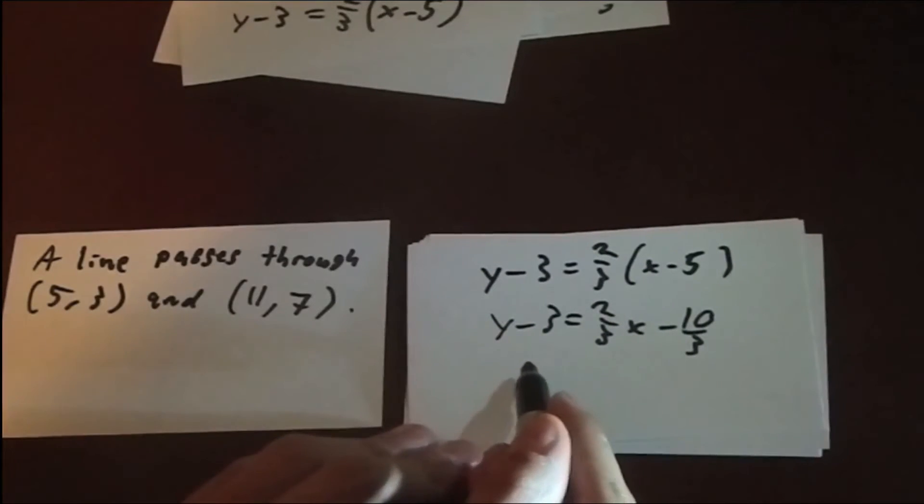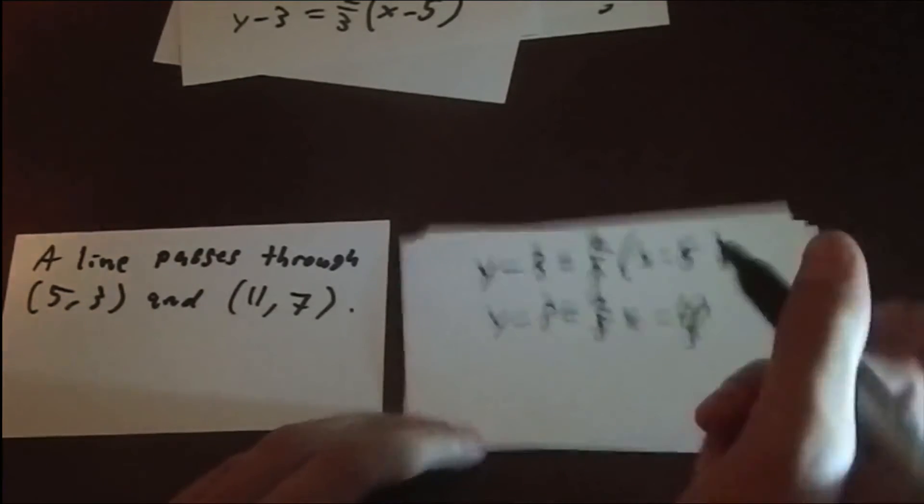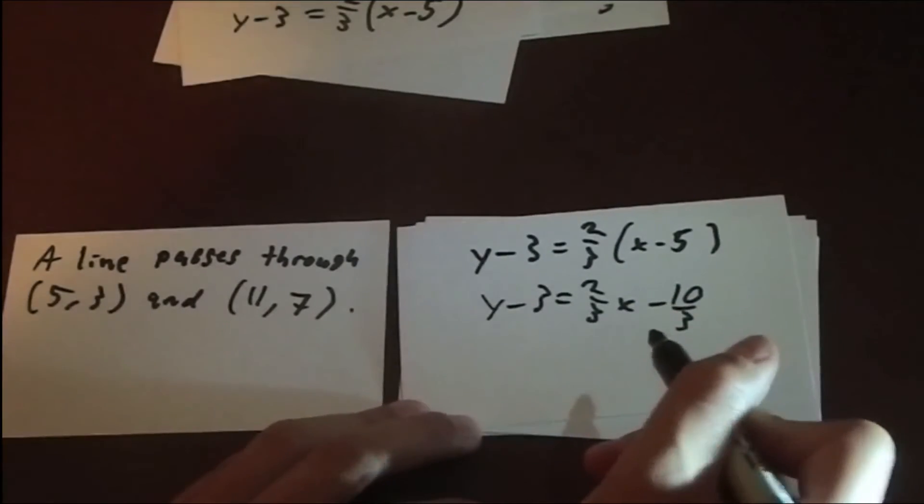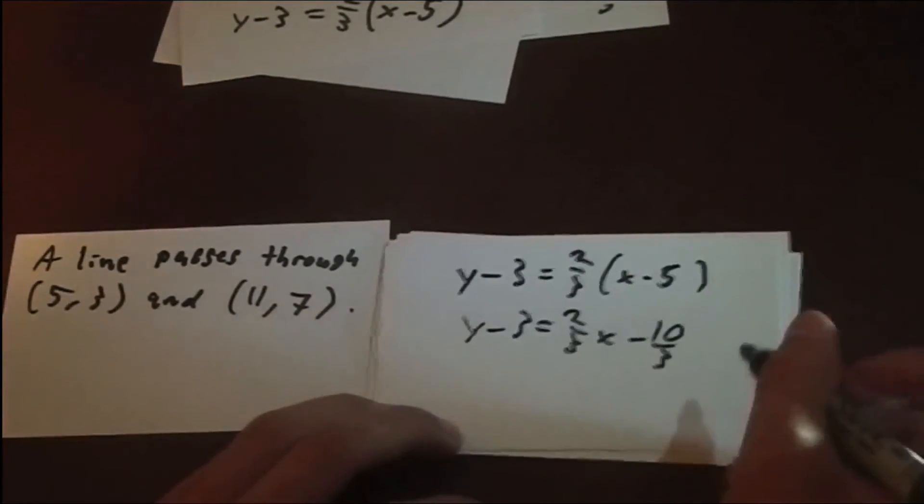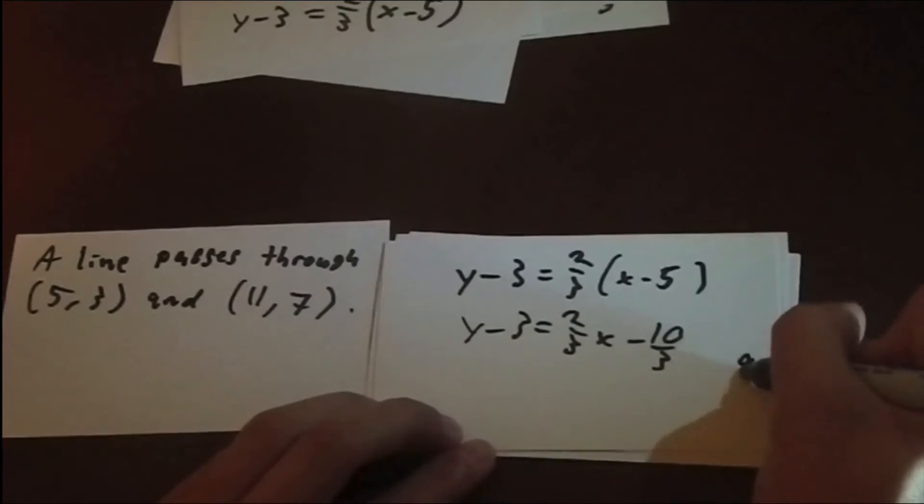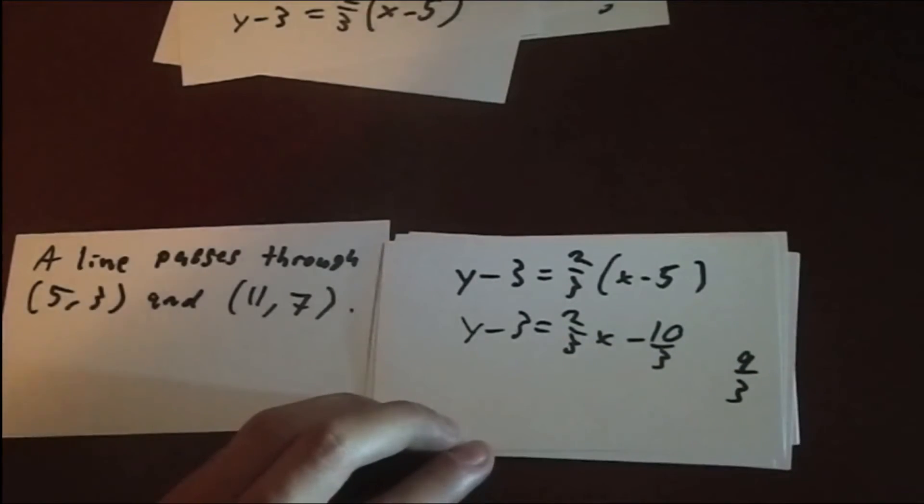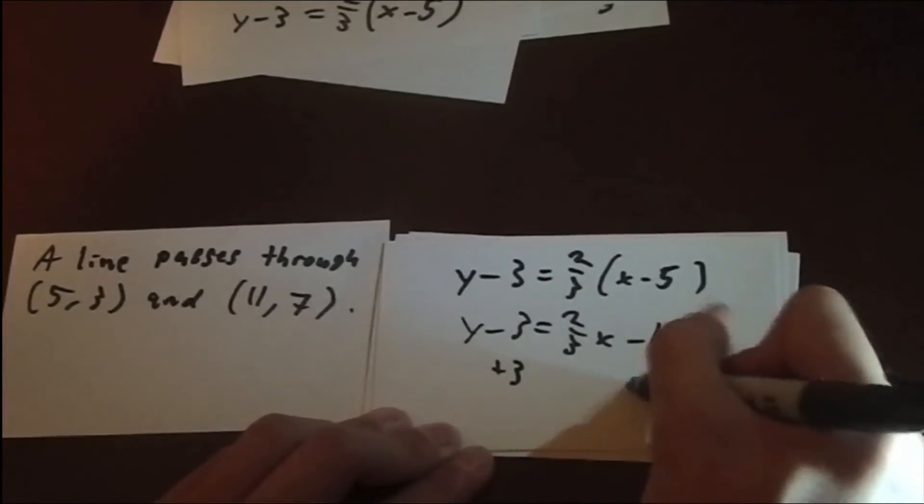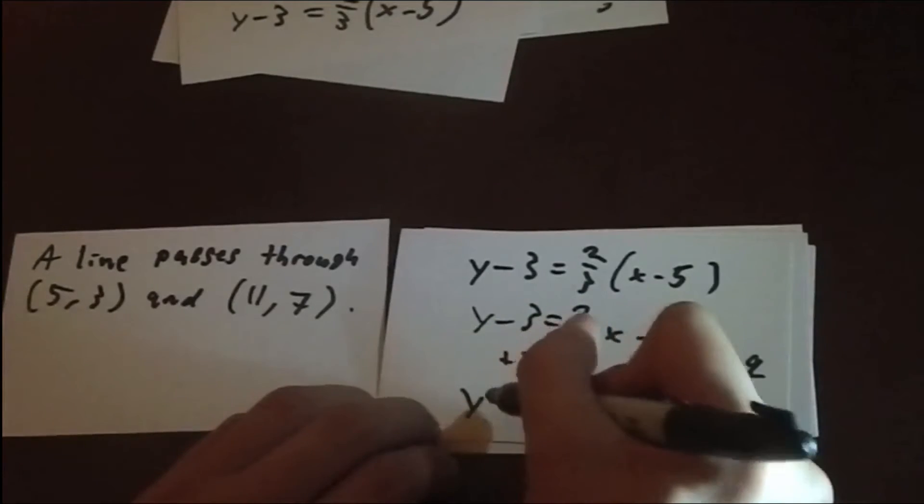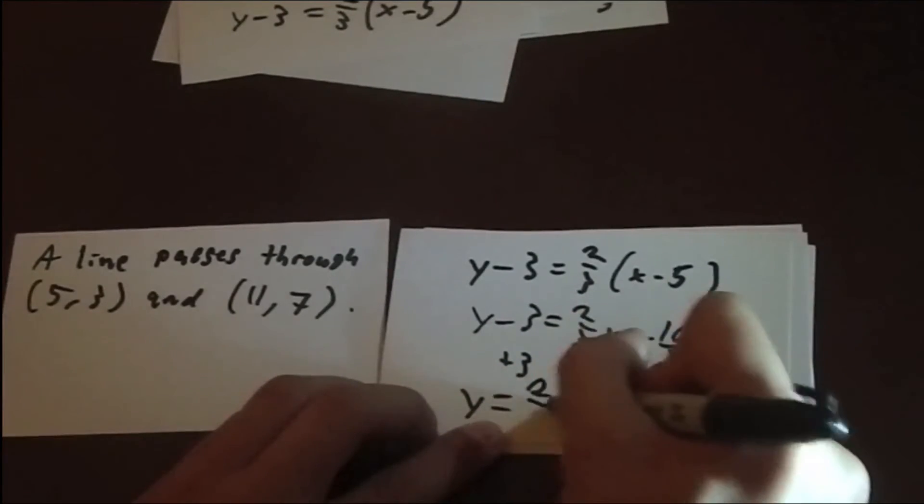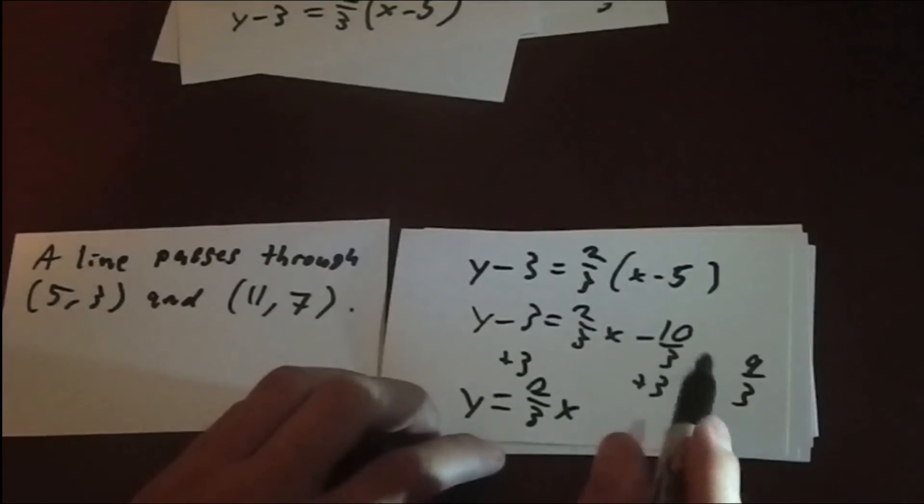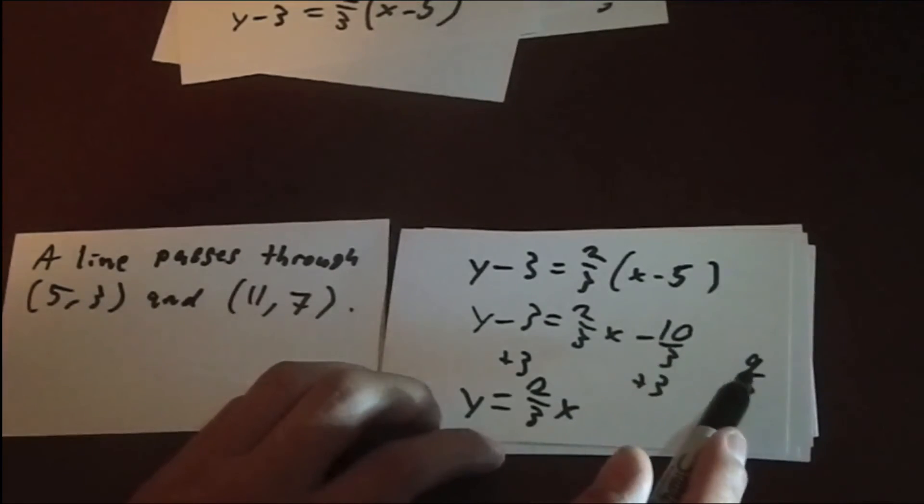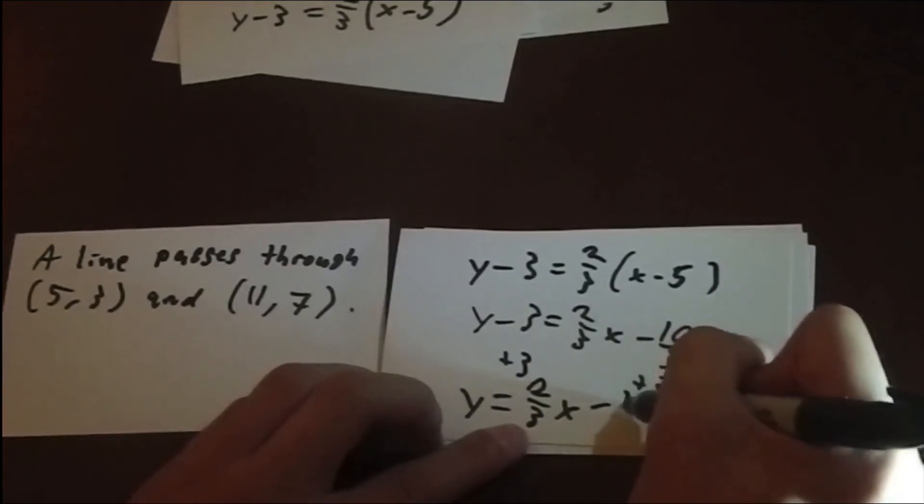Now, we want to isolate y, so it's going to be in y equals mx plus b. We're going to add 3 to both sides. But, 3 can be rewritten as 9 thirds, which is what I'm going to do. So, plus 3 plus 3. And then we end up with y equals 2 thirds x. And since negative 10 plus 9 is negative 1, it's going to be minus 1 third.